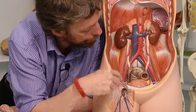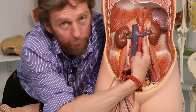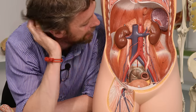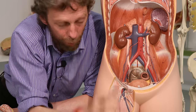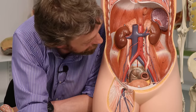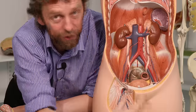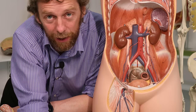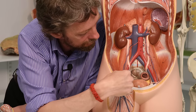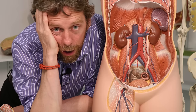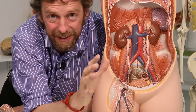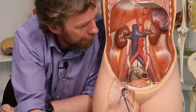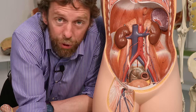The veins follow the same descent route. The left testicular vein drains into the left renal vein because the inferior vena cava is shifted to the right, whereas the right testicular vein drains directly into the inferior vena cava. For lymphatic drainage: because the testes descended and trailed their lymphatic vessels behind them, testicular cancer can spread via those lymphatic vessels up to lumbar, pre-aortic, or para-aortic lymph nodes in the abdomen — making spread much more difficult to treat.